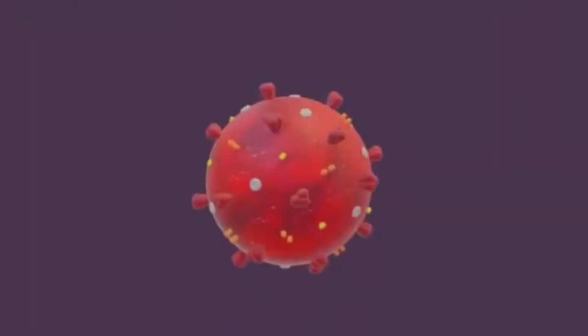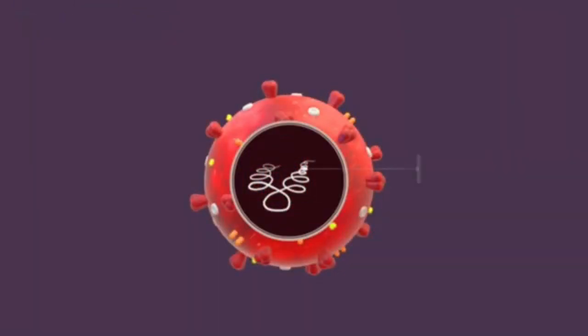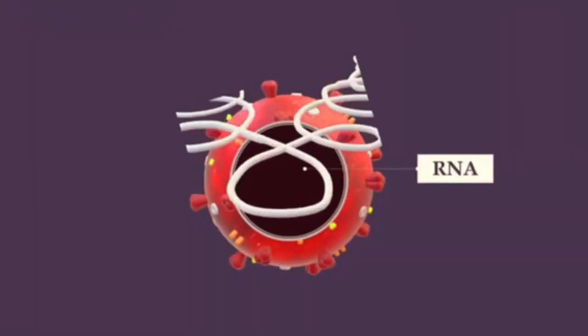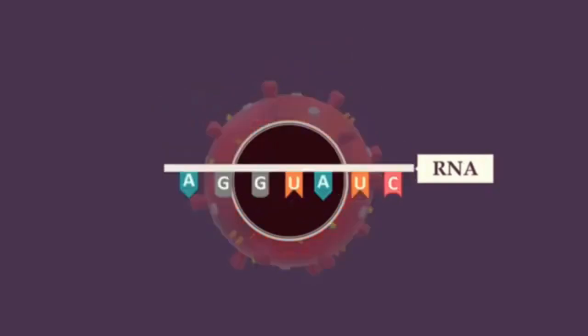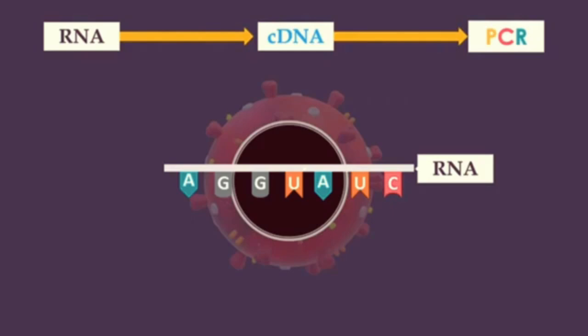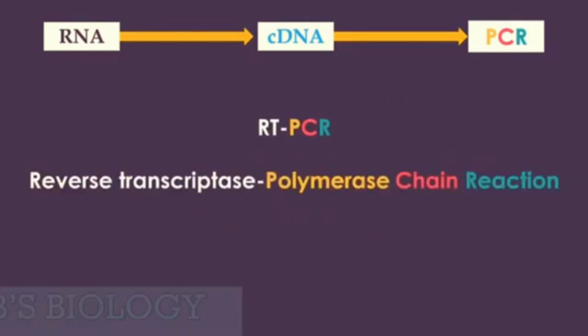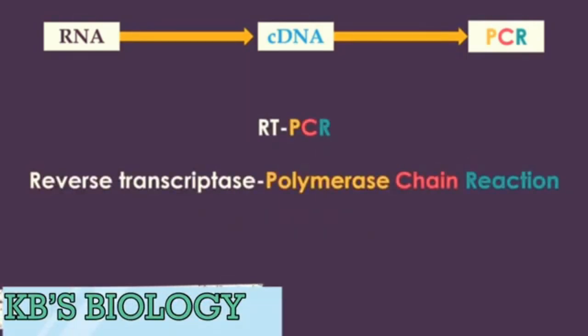Coronaviruses contain an extraordinarily long single-stranded RNA genome. To detect these viruses with PCR, RNA molecules must be converted into their complementary DNA sequences by reverse transcriptase. Then the newly synthesized DNA can be amplified by standard PCR procedures. This approach is universally known as RT-PCR.